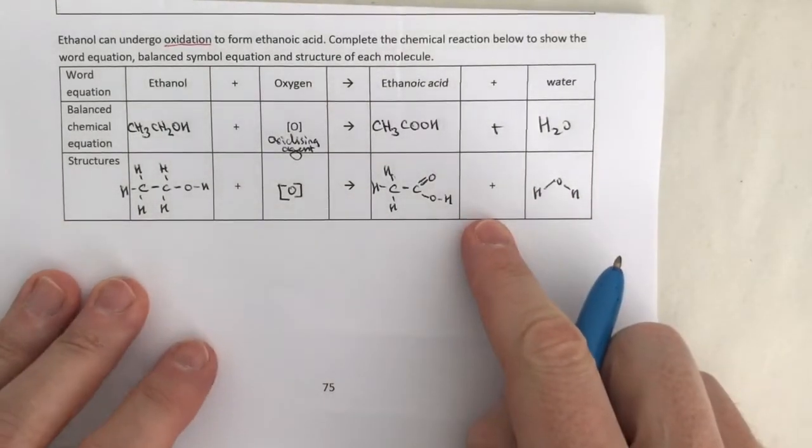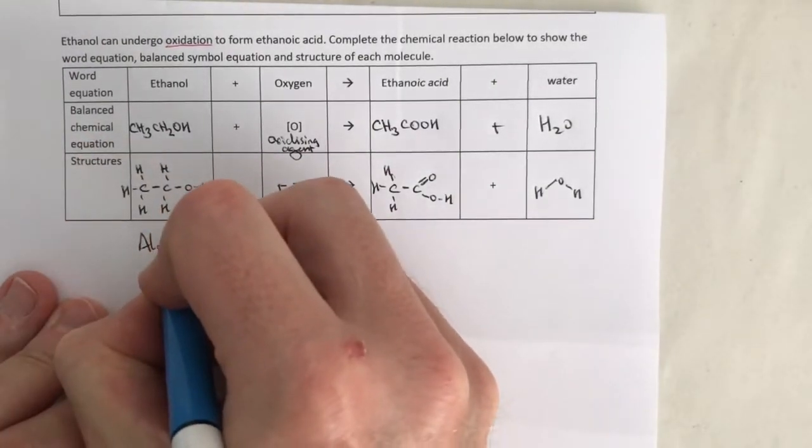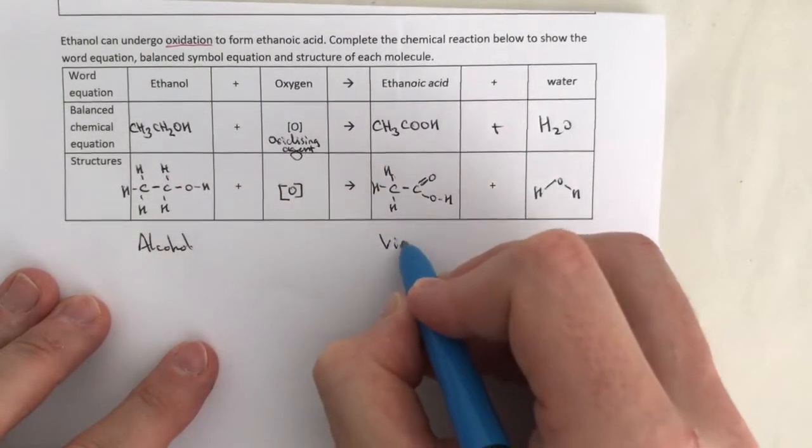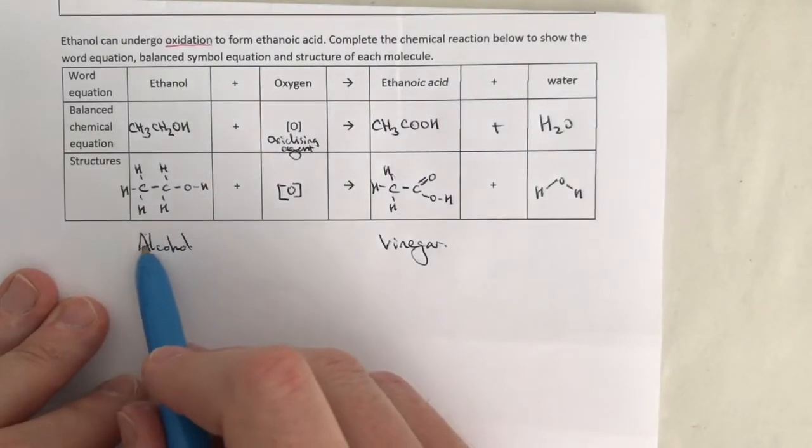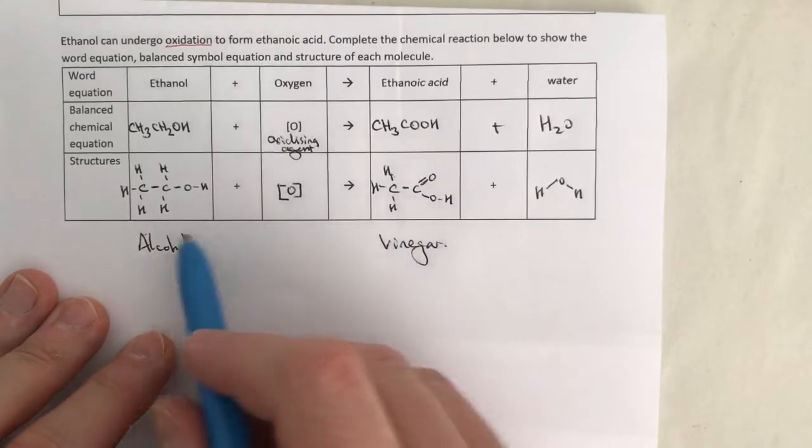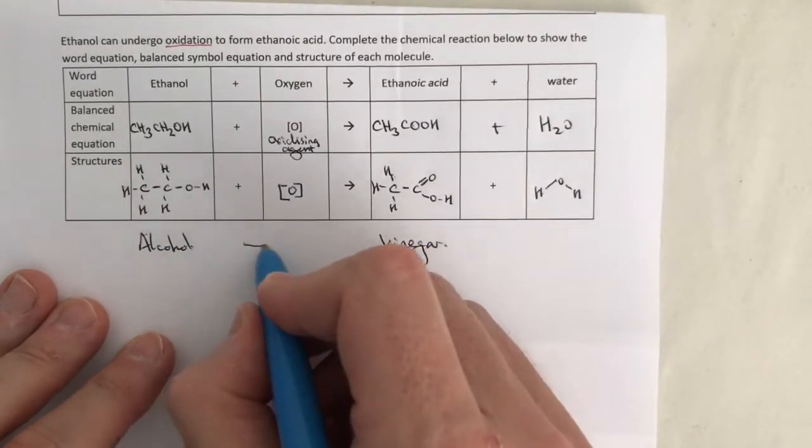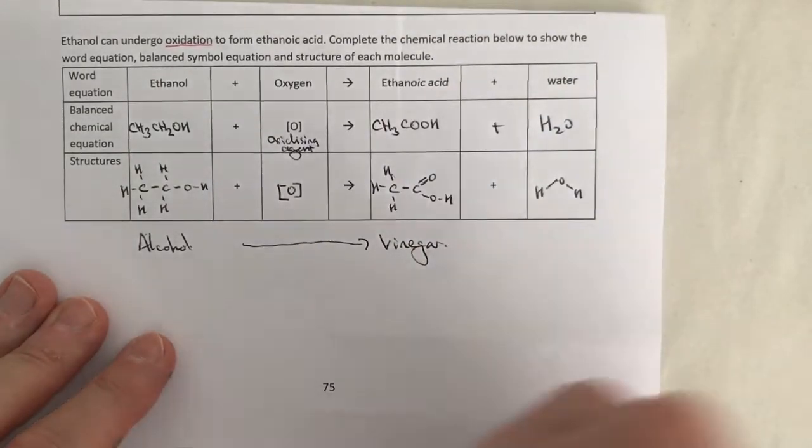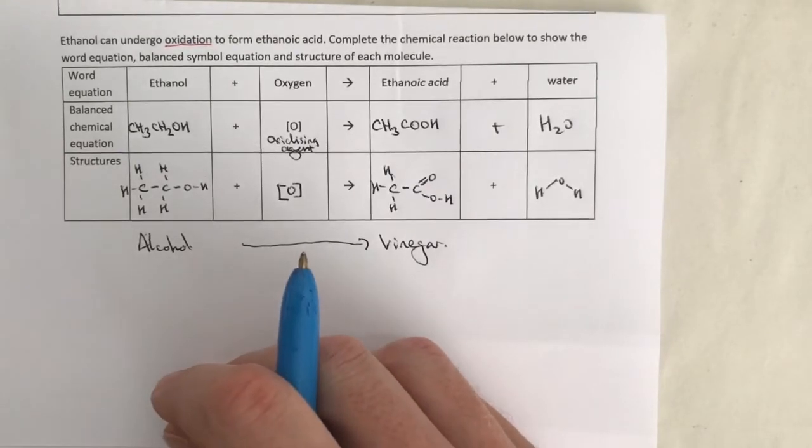There's a good example of when this happens. So actually this is alcohol, as we call alcohol, like in wine. And this is actually vinegar. And you might have heard people say that they've taken a drink of some wine and it tastes horrible. It tastes like vinegar. This is because the alcohol has been left open. The oxygen has got in and the alcohol has been oxidized to turn it into vinegar. So that's why you always seal the wine bottles back up after you've taken a drink to prevent the oxidation happening.